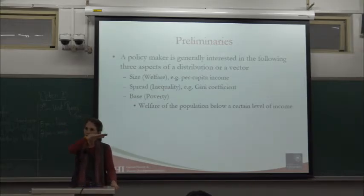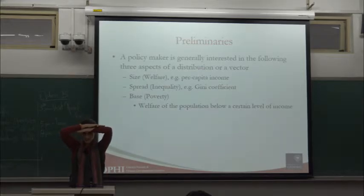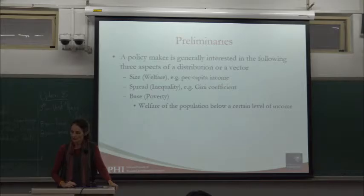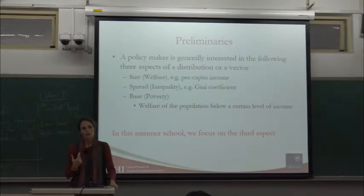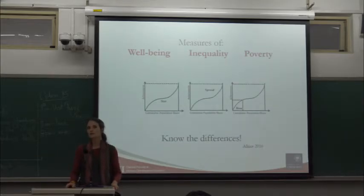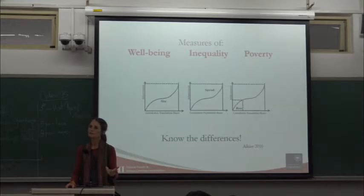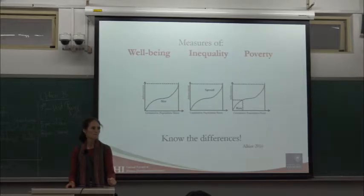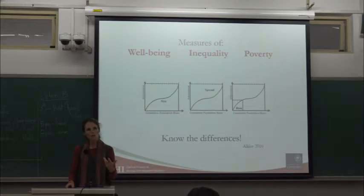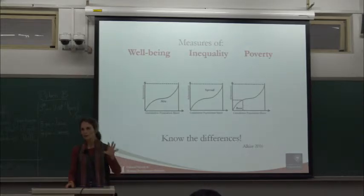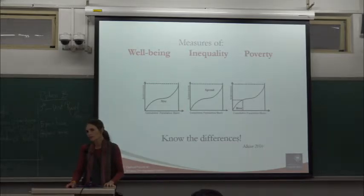I do this because we are often asked: how does the Human Development Index differ from the MPI? Well, the Human Development Index is a measure of size — it's a welfare, well-being measure. It's the average income, average life expectancy, mean years of schooling — a mean of means using a general mean in its current form. The MPI and income poverty measures are measures of the base, which censor the distribution.